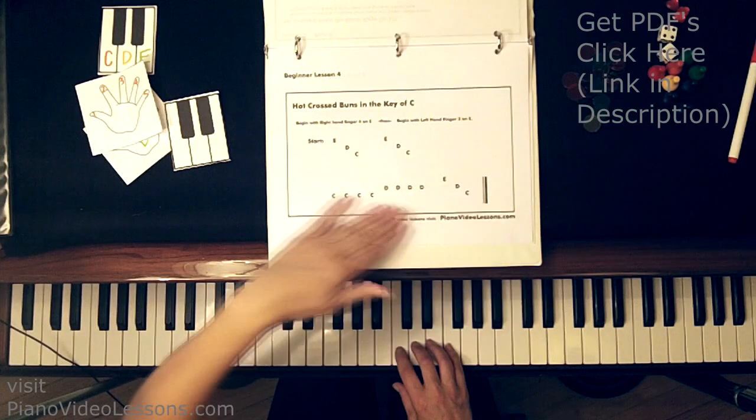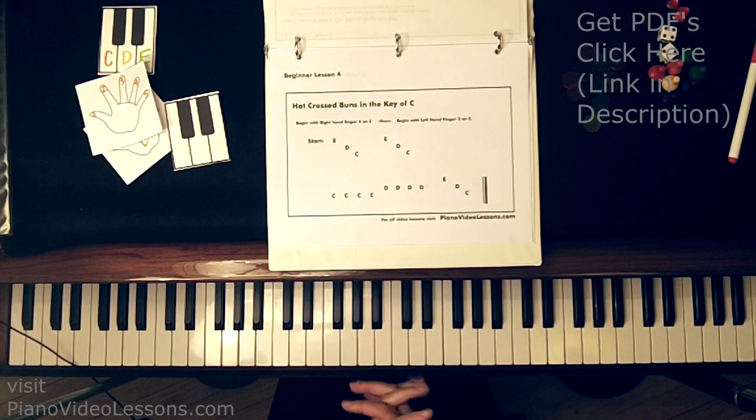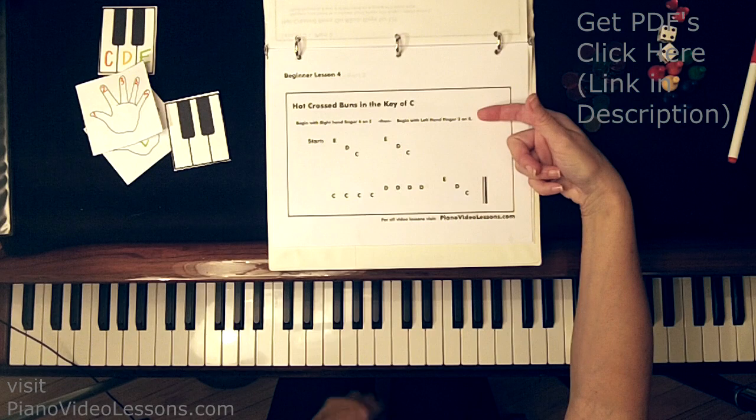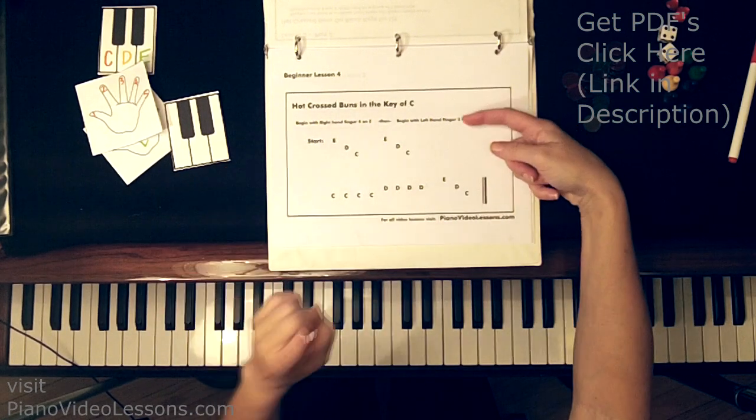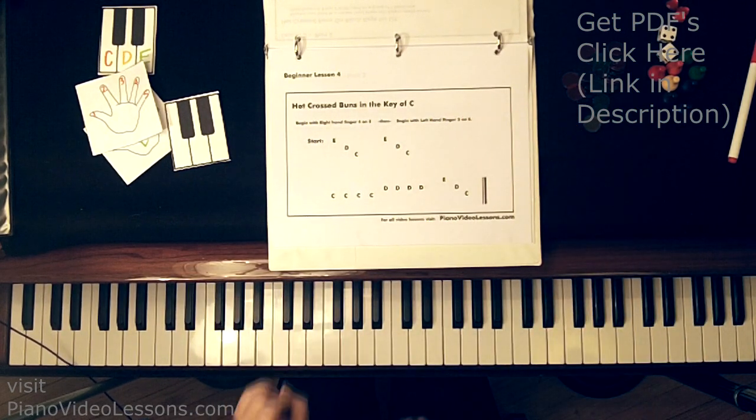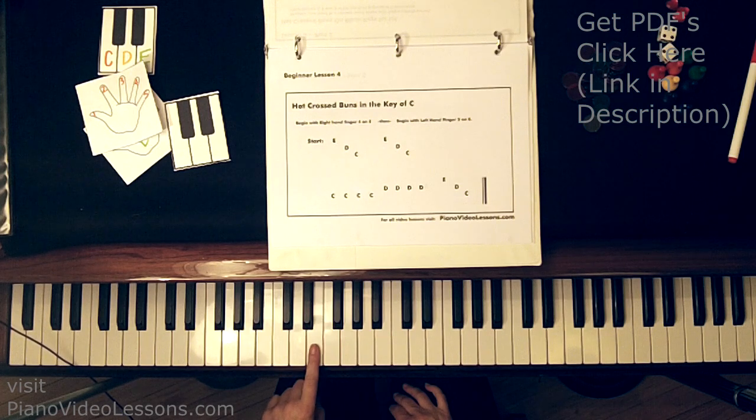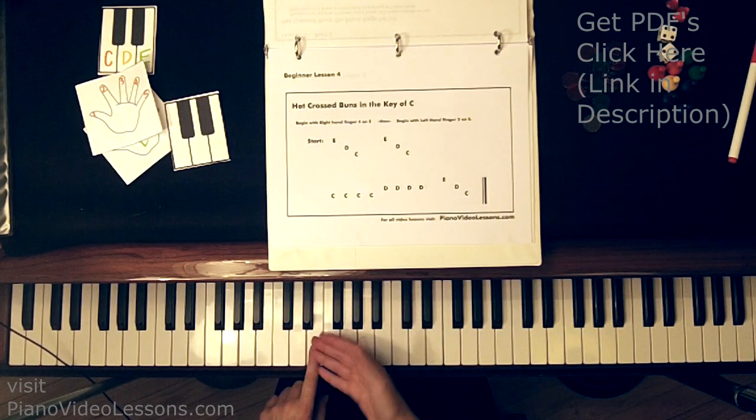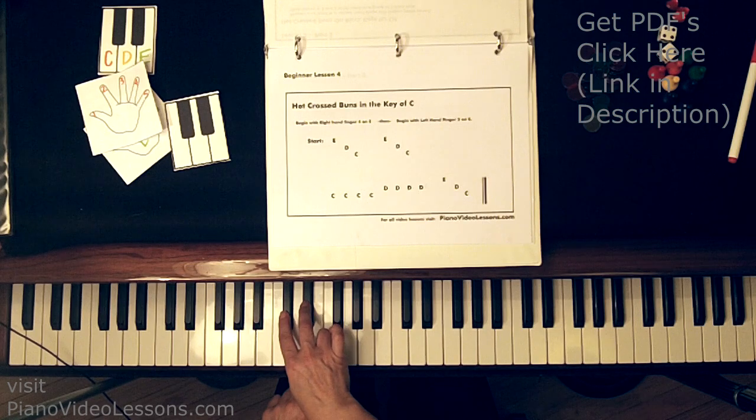Great. And since this page is only written with letters, we can play it with either hand. So we're going to play the same piece again, beginning with our left hand, finger 2 on E. So let's do that. Place your 2 on E, and I'm actually going to play it one octave lower in the next 2 black key group down.